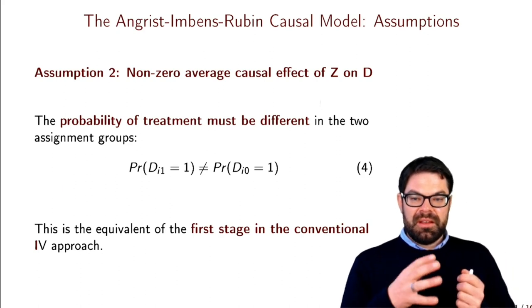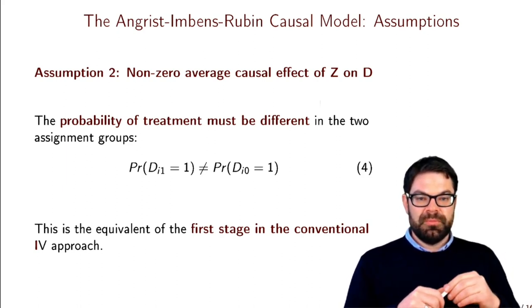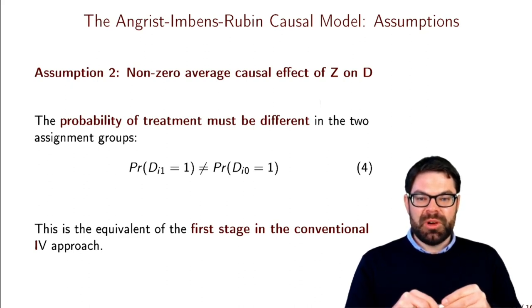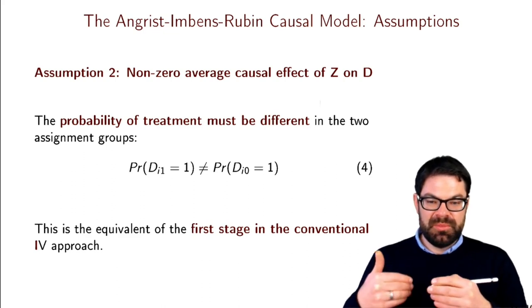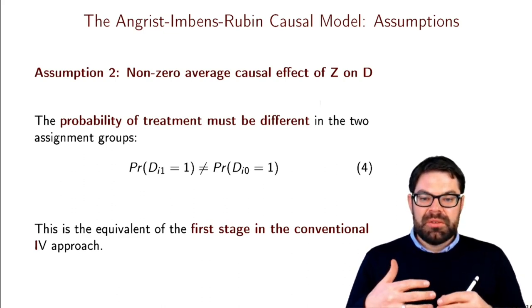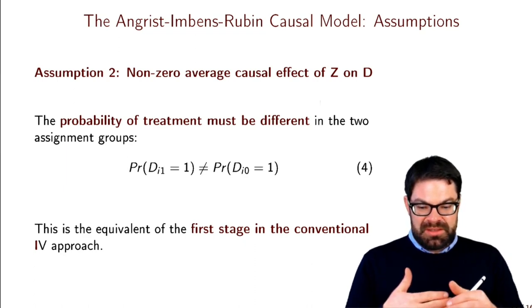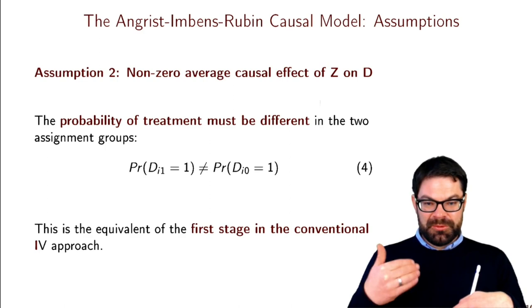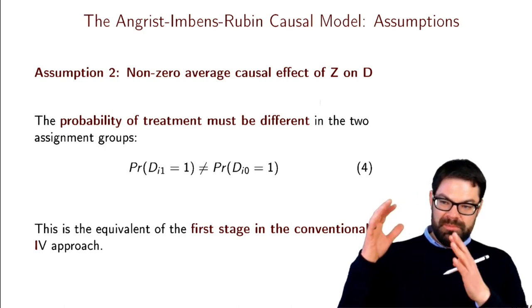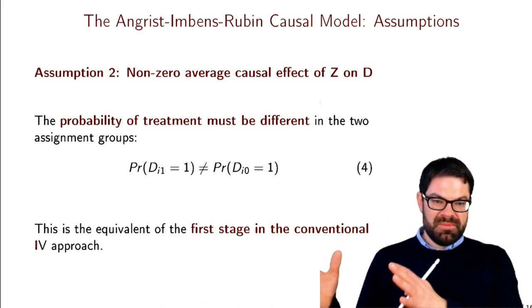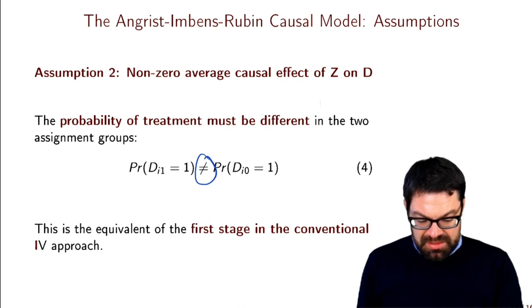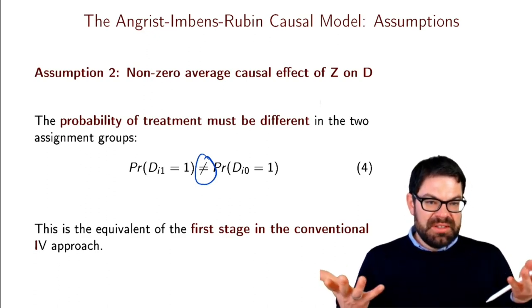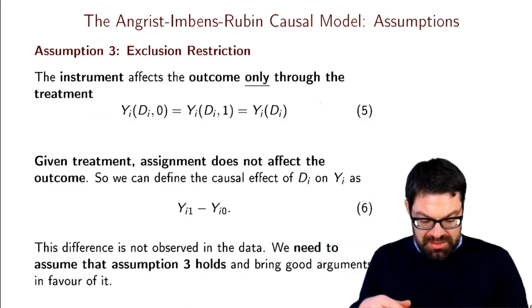Random assignment allows us to identify two intention-to-treat effects: the effect of the instrument on the treatment (equivalent to the first stage) and the effect of the instrument on the outcome. The second assumption — non-zero average causal effect of the instrument on the treatment — means the instrument must change some units' behavior. The probability of treatment should not be the same for those encouraged versus not encouraged.